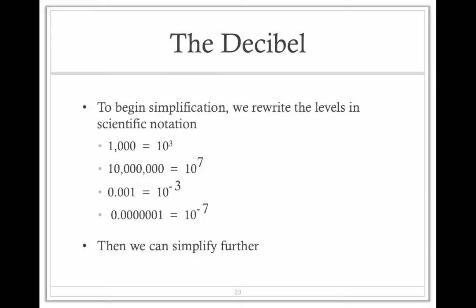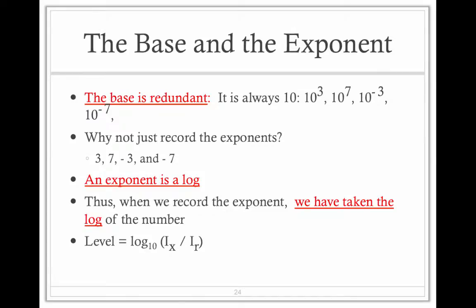And we can simplify this even further because the base is redundant. Our base is always 10. So why not just record the exponents: 3, 7, negative 3, and negative 7.